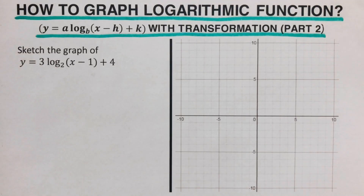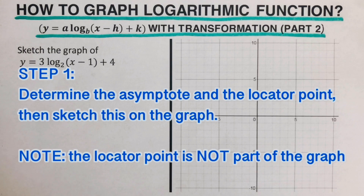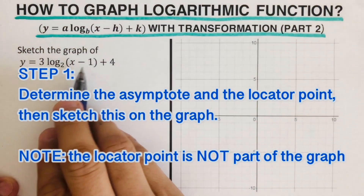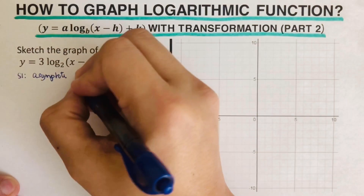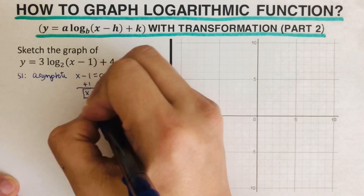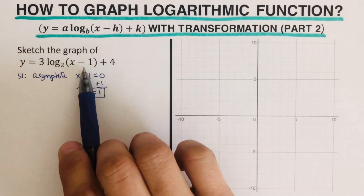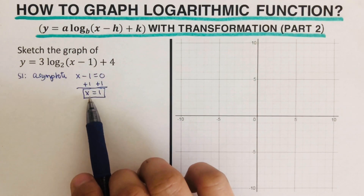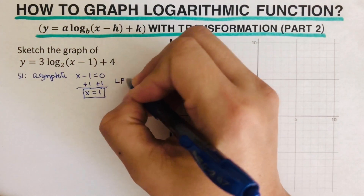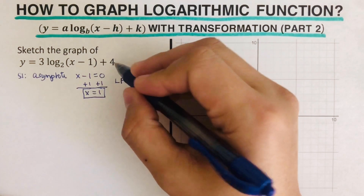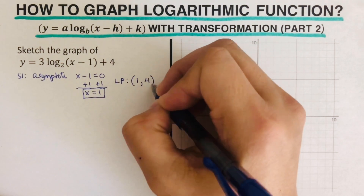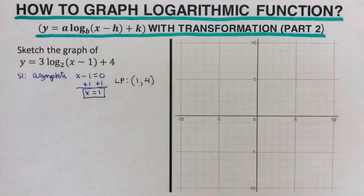Now we go over the problem. To graph this, there are steps to follow. Step one is to determine the asymptote and the locator point, and sketch these on the graph. Remember, the locator point is not part of the graph. The equation of the asymptote is found by setting the expression inside the parentheses equal to zero: x minus one equals zero, giving us x equals one. The locator point is obtained by switching and keeping, giving us (1, 4). We sketch the asymptote x equals one on the graph.